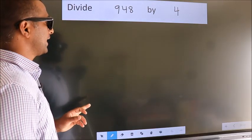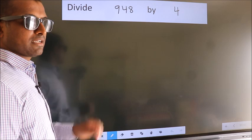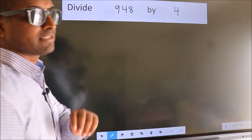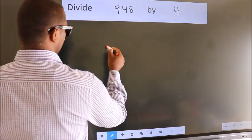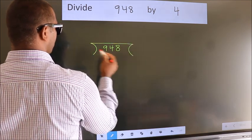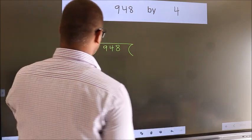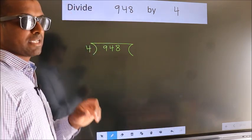Divide 948 by 4. To do this division, we should frame it in this way. 948 here, 4 here. This is your step 1.